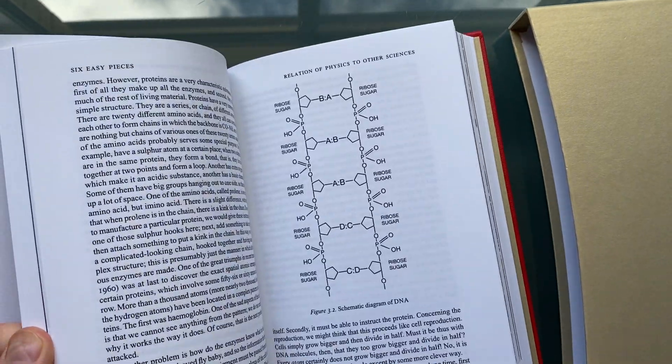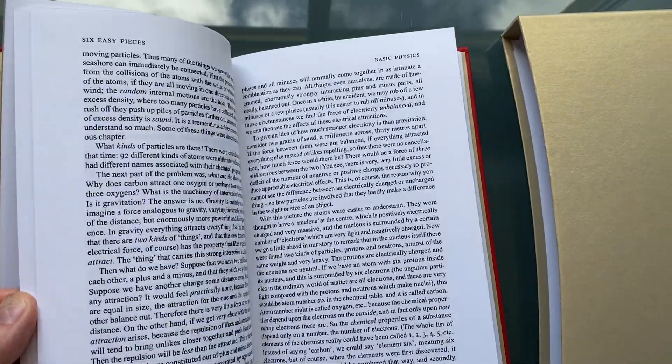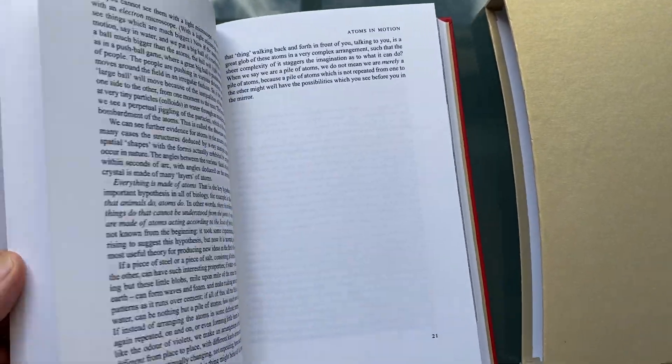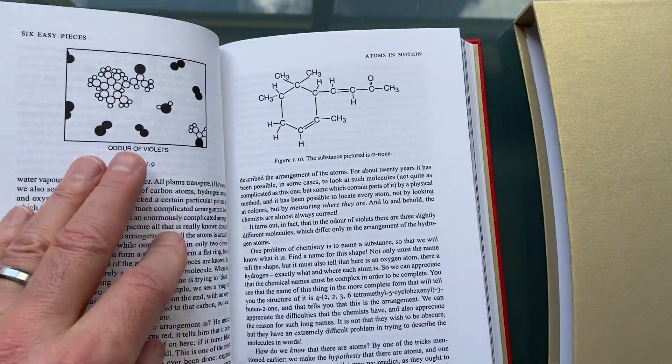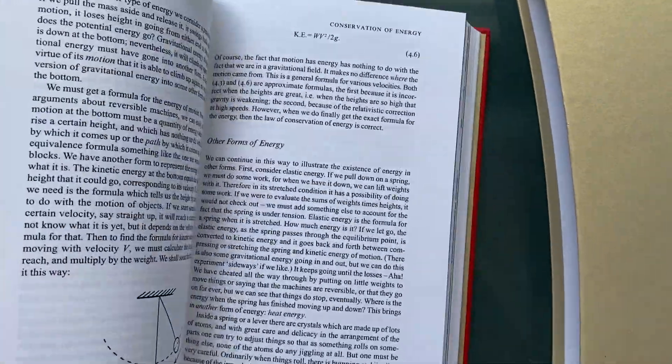These were collected from Feynman's lectures, from his university lectures, first into something called Six Easy Pieces, which are more simple kinds of ideas. Here's the conservation of energy.